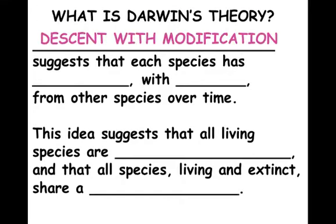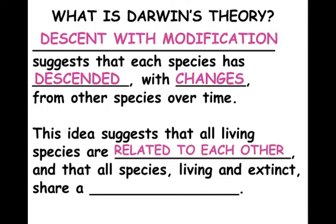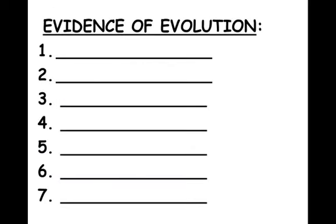Darwin's idea is that organisms have changed over time in slow baby steps — little changes each generation, the idea of descent with modification. Each species has descended with changes over time from ancestor species. This suggests that living things are related to each other, with connections we see in the fossil record. All species, living and extinct, share common ancestors — there are connections between organisms.